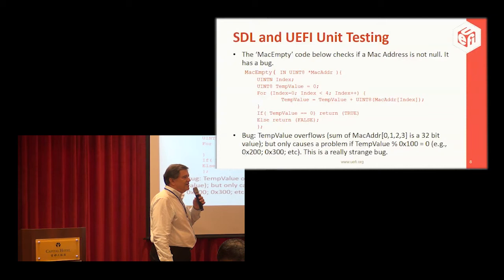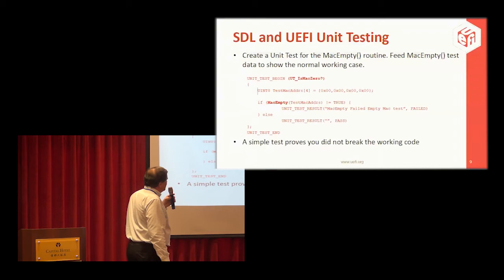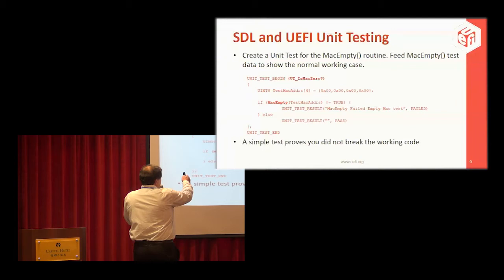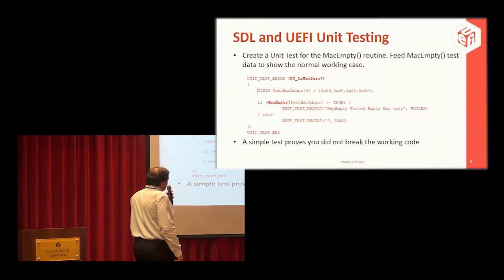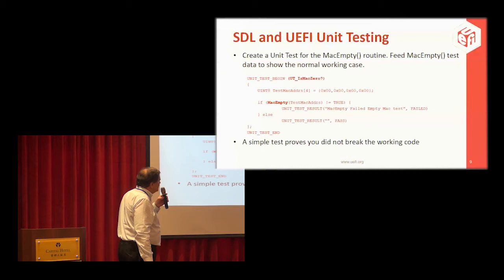This is what unit testing is all about. We create a unit test for the MAC empty routine and feed it some data to show the normal working case. There's a macro called unit_test_begin supplied by the test harness — no need to create it yourself. It takes a name; we call it UT_is_MAC_zero. We feed it a series of four zeros, execute MAC empty, and if it comes back not true, the test failed; otherwise it passed. That's all there is to it.